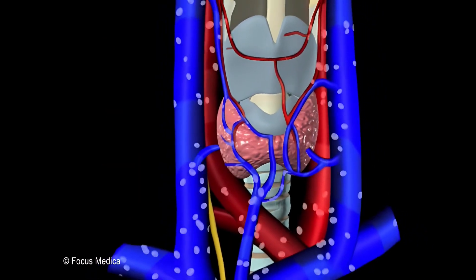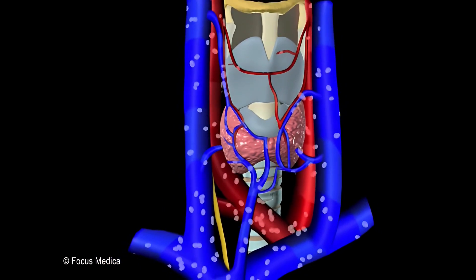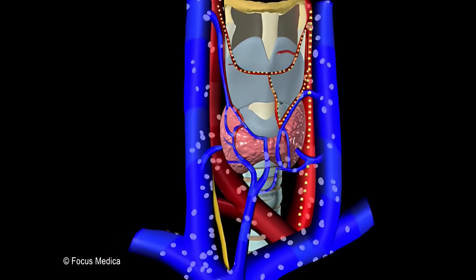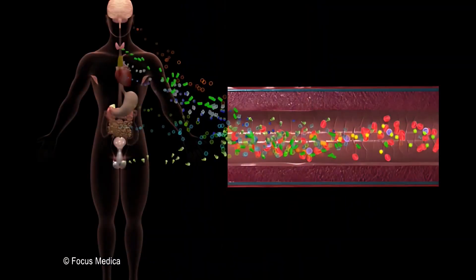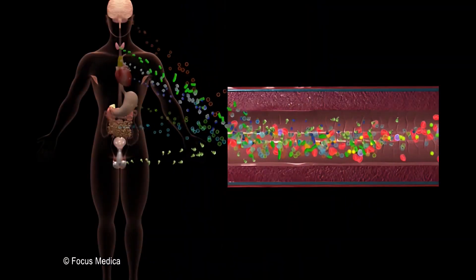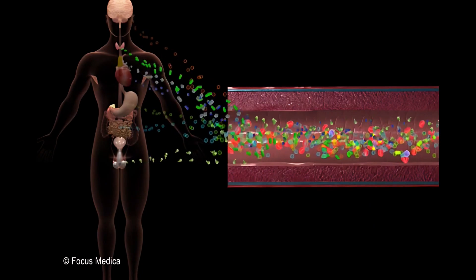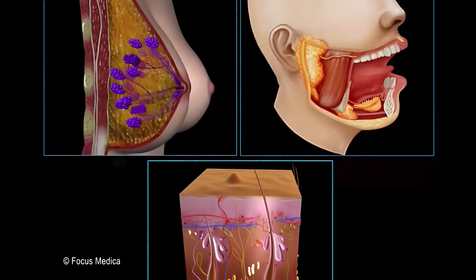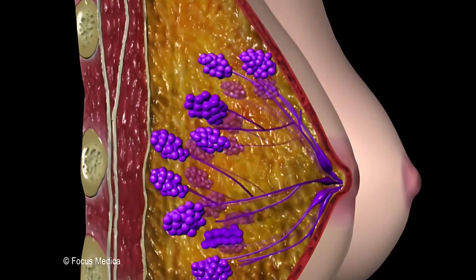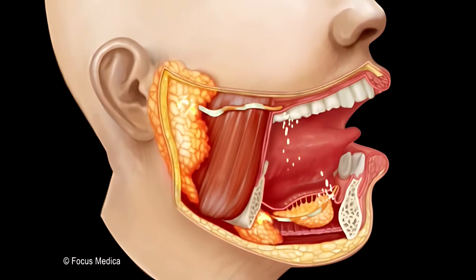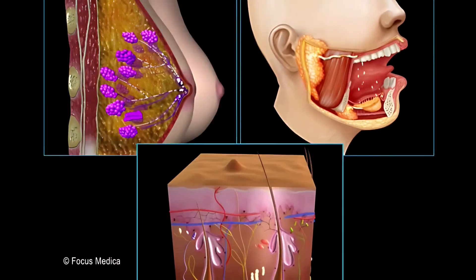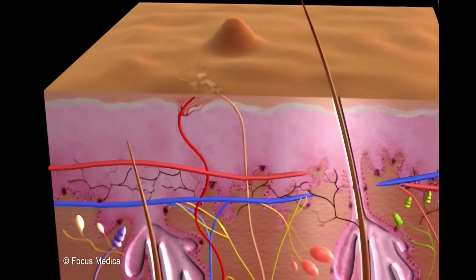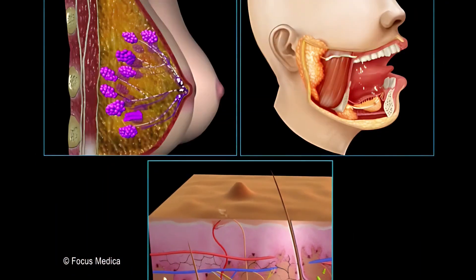Endocrine glands, also called ductless glands, are devoid of ducts. They secrete hormones directly into the bloodstream. Exocrine glands, such as the mammary, salivary, and sweat glands, release their secretions through ducts to the external environment.